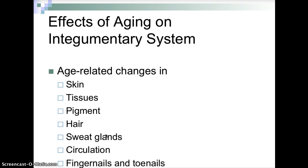Effects of aging on the integumentary system include age-related changes in skin, tissues, pigment, hair, sweat glands, circulation, and fingernails and toenails. The skin wrinkles because the epidermis is loose, there are fewer dermal fibers that are more disorganized, and the hypodermis has less padding. Homeostatic adjustment to heat is limited due to fewer blood vessels and fewer sweat glands, making older people more sensitive to overheating and heat strokes during heat waves.